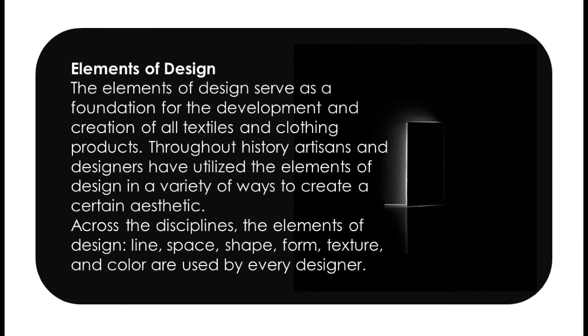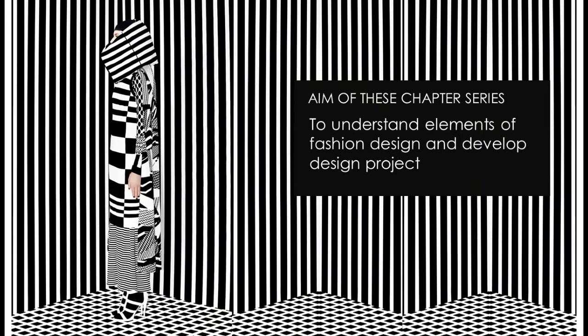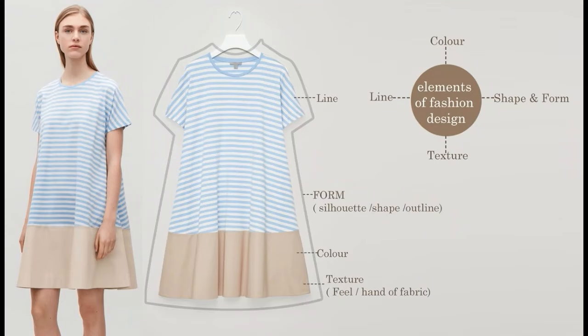Across disciplines, the elements of design — line, space, shape, form, texture, and color — are used by every designer. The aim of this chapter is to understand elements of fashion design and develop design projects. This is how visually the elements of design look: you have line, then form, then color, and texture.